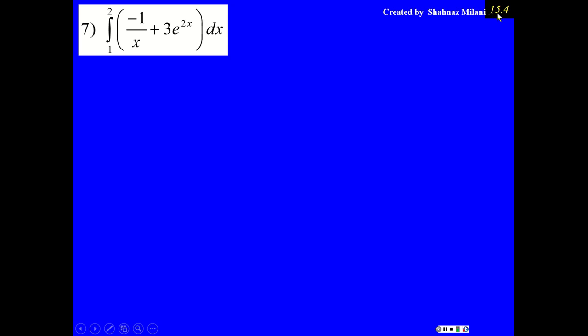This is Milani, Chapter 15, Section 4, Problem No. 7. In this problem, I do not see any product rule, quotient rule, or chain rule. That means we do not use the u-substitution.